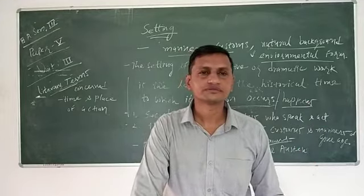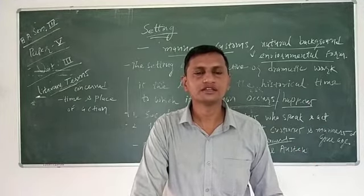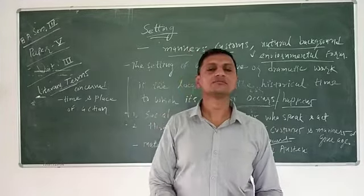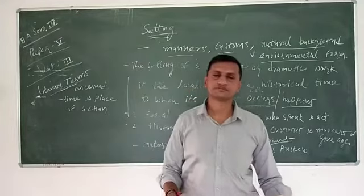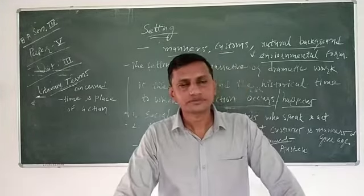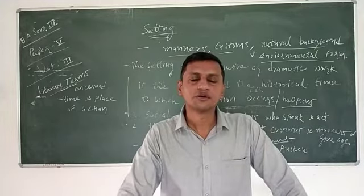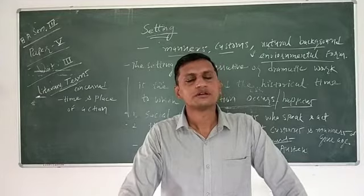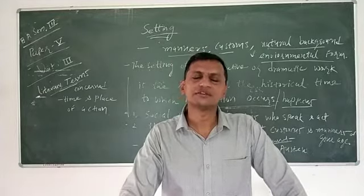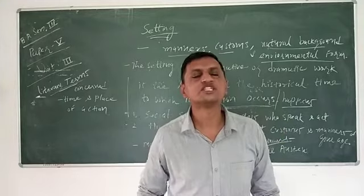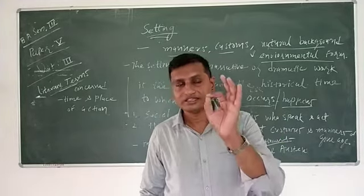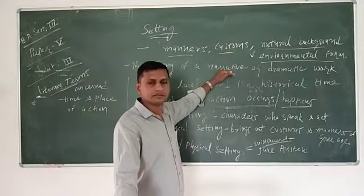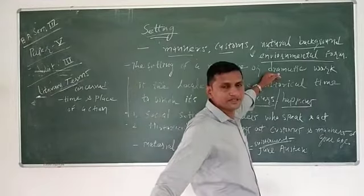Poetry - epic, ballad, sonnet, lyric, ode, elegy and these are the forms of poetry. And third, drama - comedy, tragedy, dark comedy, sentimental comedy, and generally comedy, tragedy, and historical plays are in the drama. In this sense we can say that the setting of narrative means prose and drama.